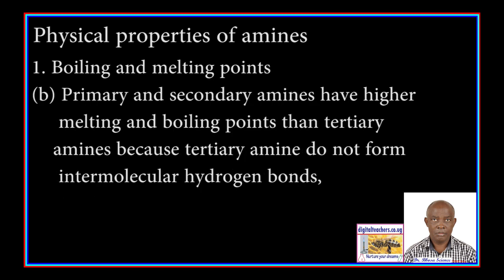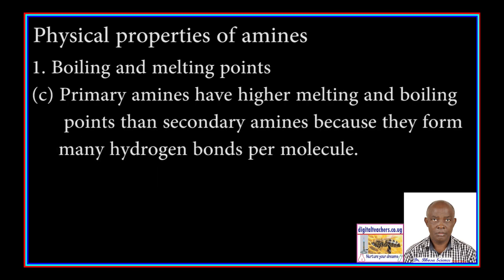B. Primary amines and secondary amines have higher melting and boiling points than tertiary amines, because tertiary amines do not form intermolecular hydrogen bonds. C. Primary amines have higher melting and boiling points than secondary amines because they form more hydrogen bonds per mole.